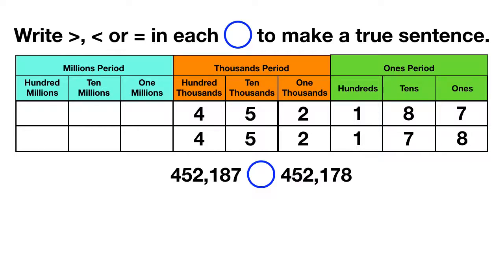Now we want to see which of these numbers is larger, so it makes sense to compare the largest place value first. The biggest place value these numbers have is the hundred thousands, so we'll start by comparing those. When we look, we have a four and a four — those numbers are the same, so it doesn't help us figure out which number is larger. We can cross those out and look to the next place value.